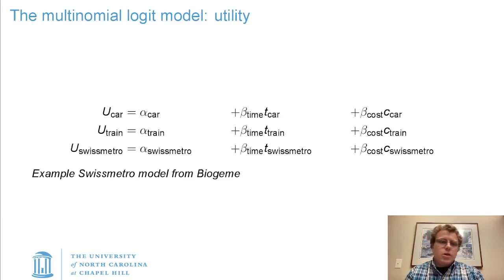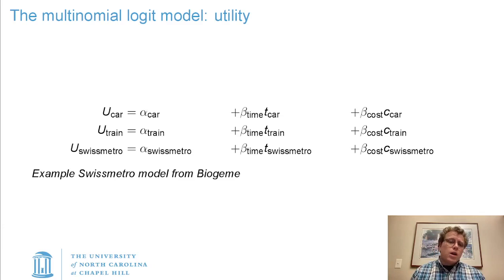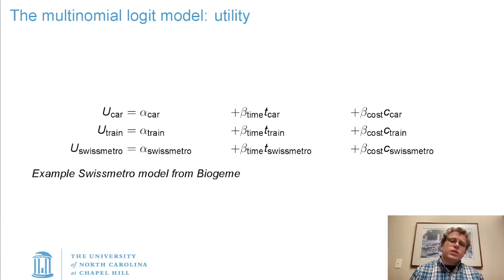I imagine most folks are familiar with what the multinomial logit model looks like, but in case you aren't, the basic idea is you define utility functions for each of the alternatives that folks are making decisions between. So in this case, this is a model of transport mode choice — how to get somewhere — car, train, or metro.